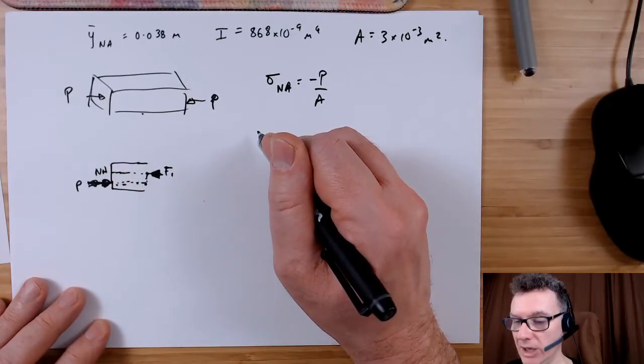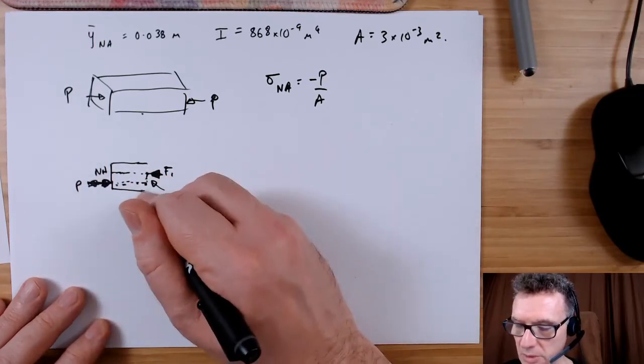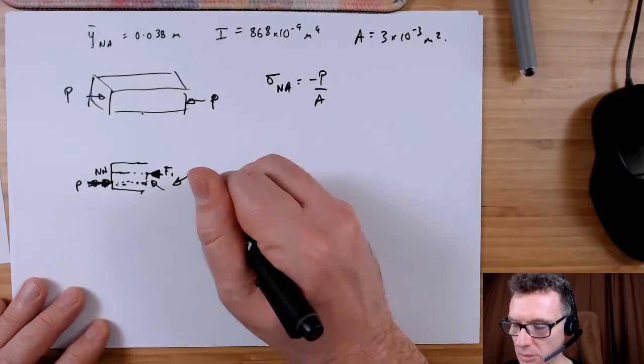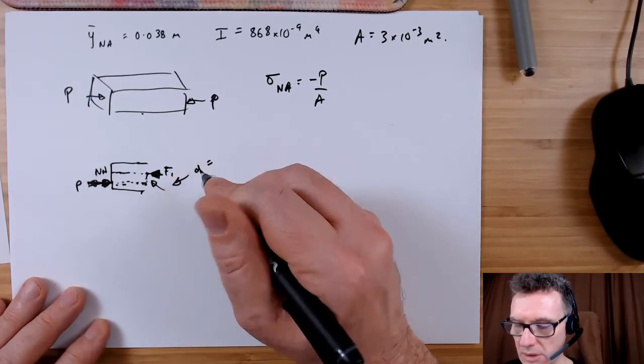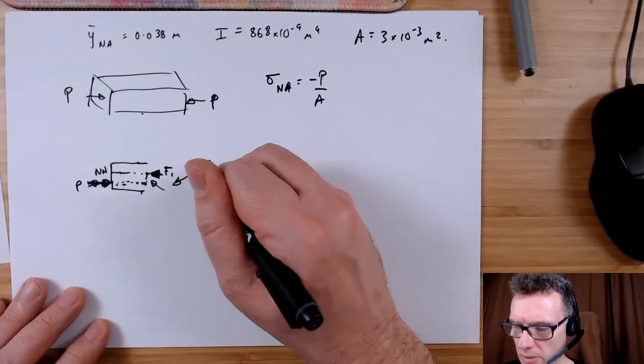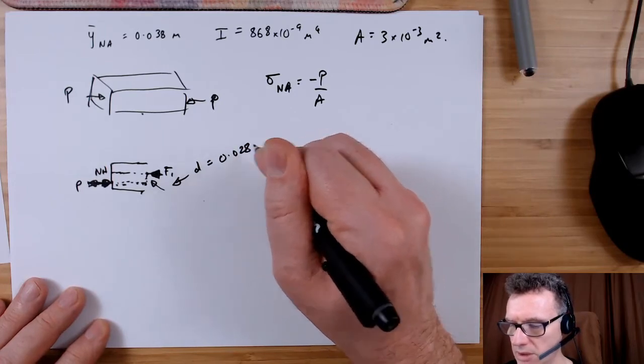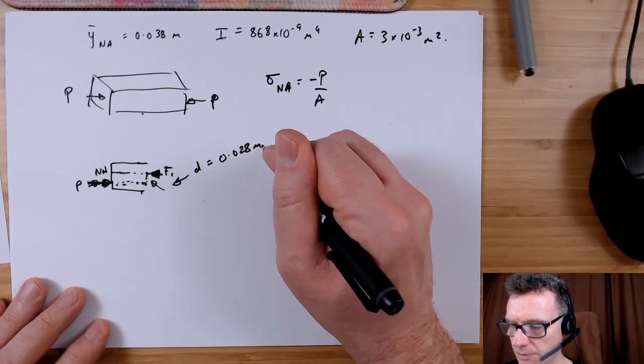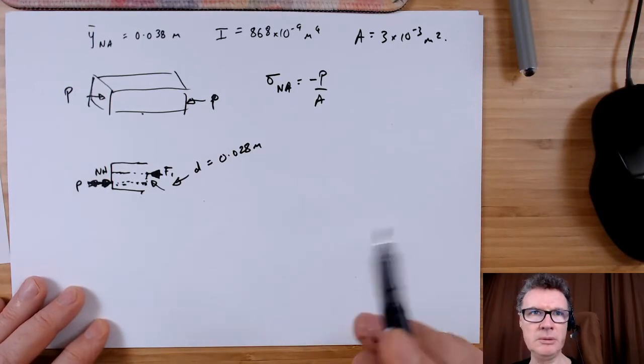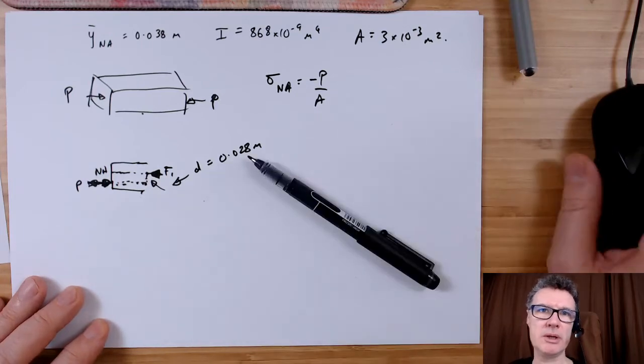So our turning moment value is going to be, let's call it d, is that okay? So we call it d which will be 0.028 meters. Yeah, so take off 10 millimeters. Right, so what I want to do next.